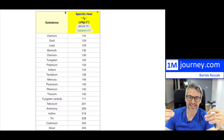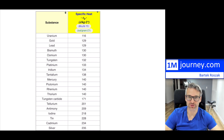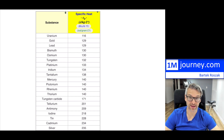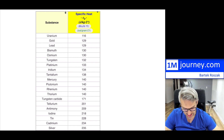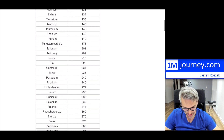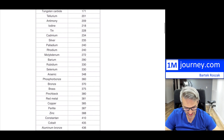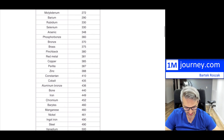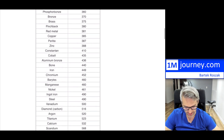It doesn't make sense for us to use gold because it would be very expensive — for example, for our pots or pans when cooking. So we want to use something a little less expensive. As you can see, there are a lot of metals here — even copper, zinc — and they're very low on the specific heat capacity list.